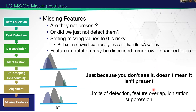One important thing to stress about missing features: just because you don't see it, it doesn't mean it isn't present. This is because of limits of detection, ionization suppression, and feature overlap. Try to avoid setting a missing value to zero. There are ways to set a correct number instead — this is called imputation — but you have to be really careful that you don't skew your results. Missing features are something you need to pay attention to during your analysis.